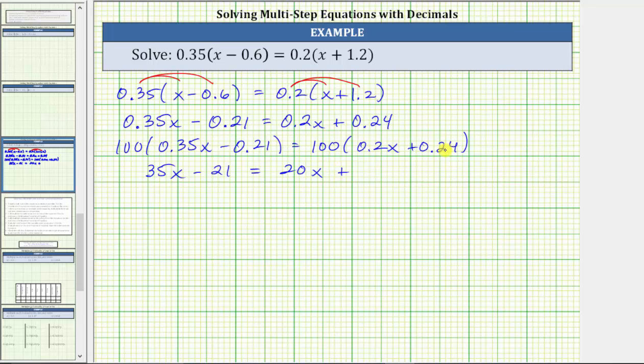And then we have plus 100 times 0.24, which is 24. Now we have an equivalent equation that does not contain decimals.